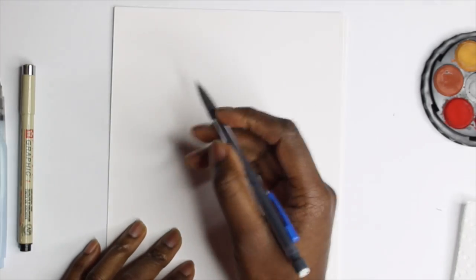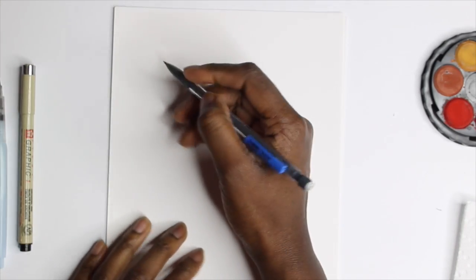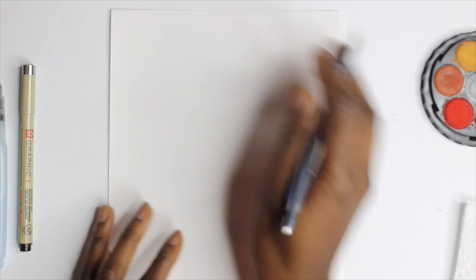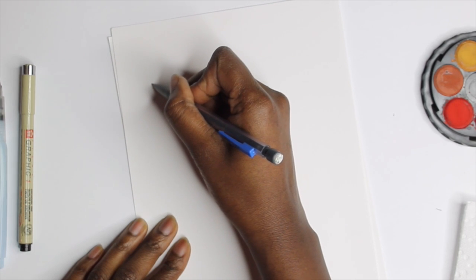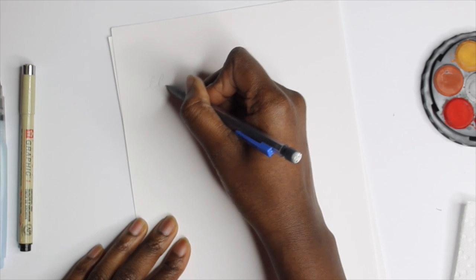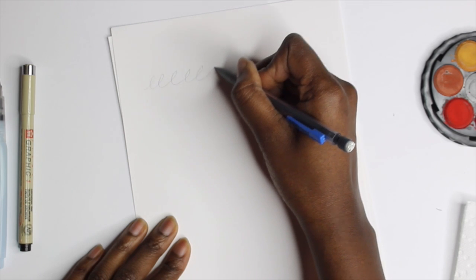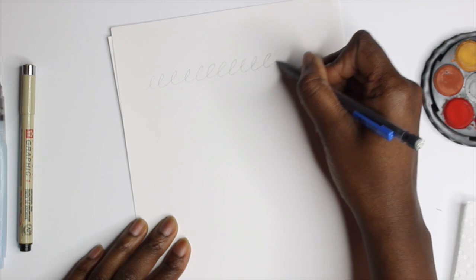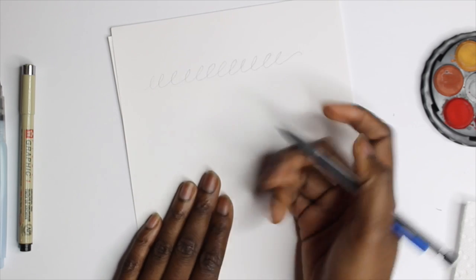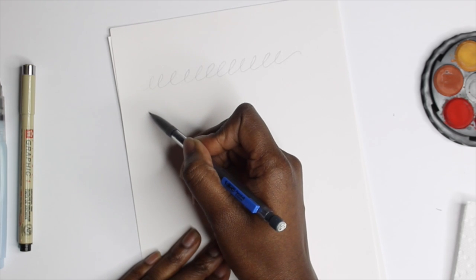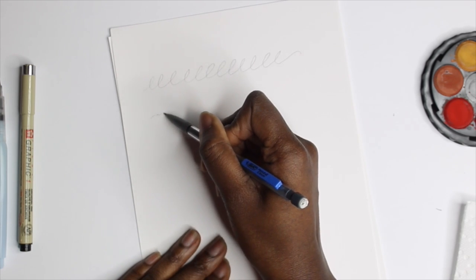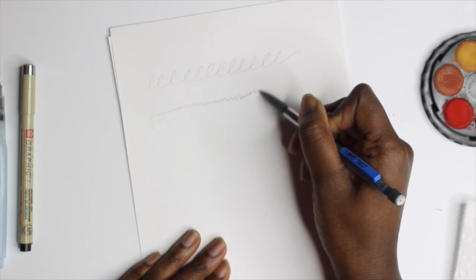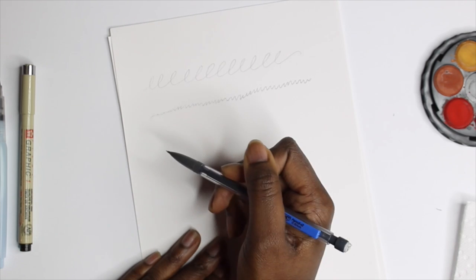Right now we're going to be starting with some simple exercises just to loosen you up a bit while you're sketching. Using the pencil, just lightly doing some swirly lines, almost like a cursive E or an L, and you're just going to keep on going all the way down the paper. Next we're going to be doing some very jagged lines, just up and down.